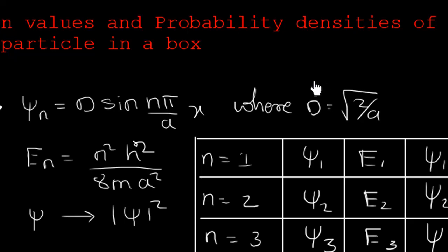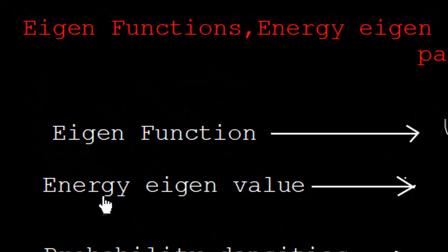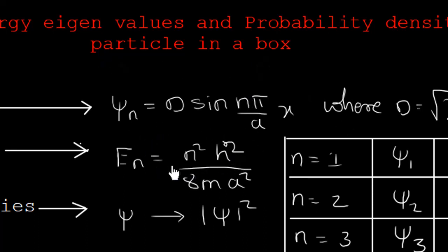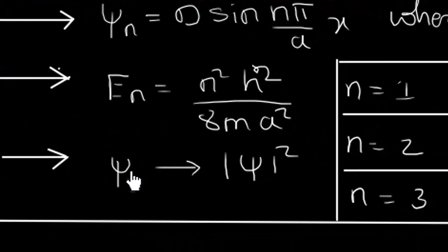In the same derivation we also calculated the energy eigenvalues: Eₙ = n²h²/(8ma²). This is also covered in the previous potential well derivation video, so I request you to go and check that out. Then the probability density is obtained by taking the modulus square of ψ — |ψ|² gives us the probability density.